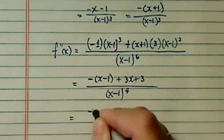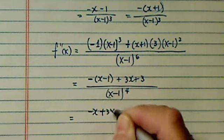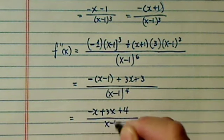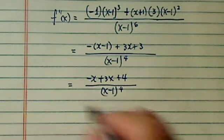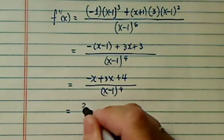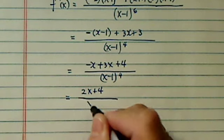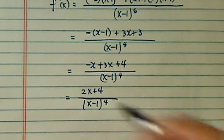Okay, let's open up, and then we're almost there. Minus x plus 3x plus 1, so it's plus 4. x minus 1 to the 4th, and then the one more term, so I have 2x plus 4 on the top, divided by x minus 1 to the 4th on the bottom.